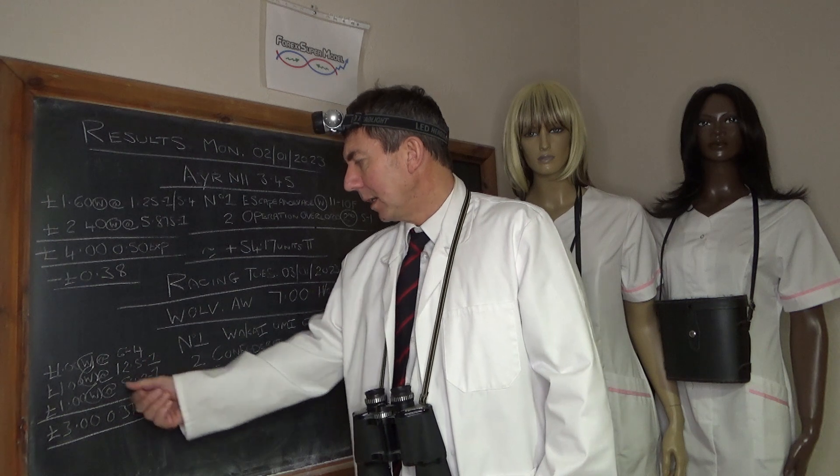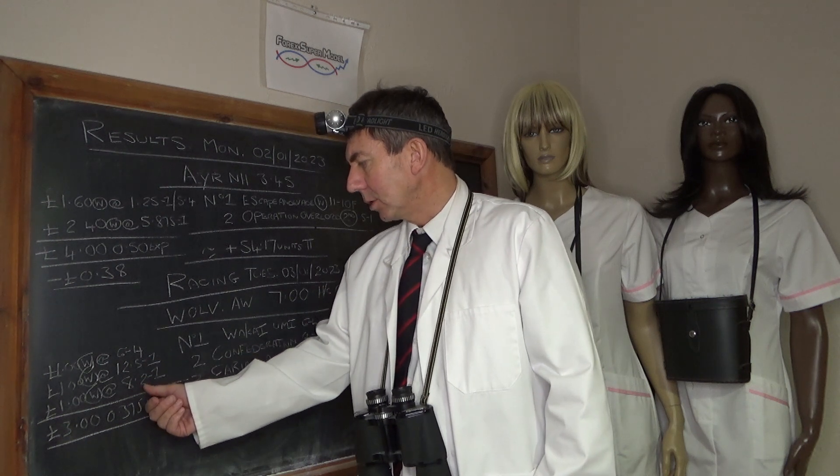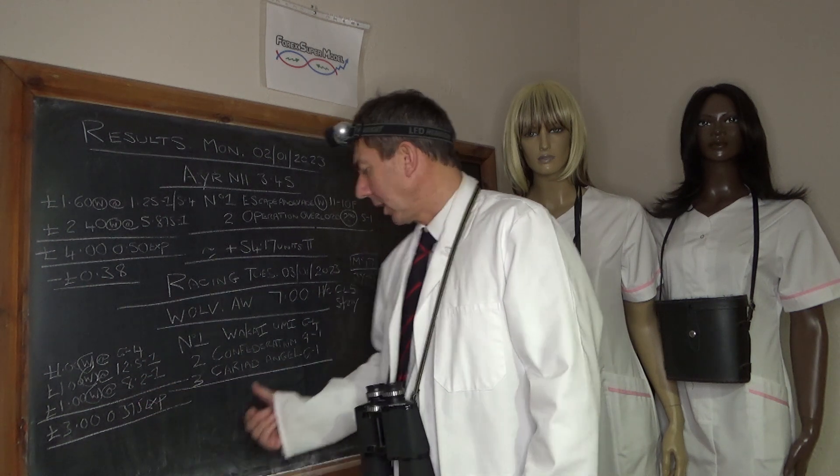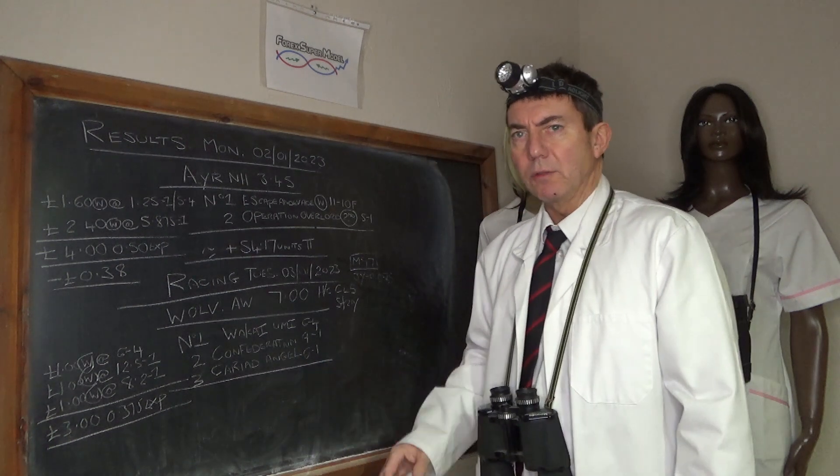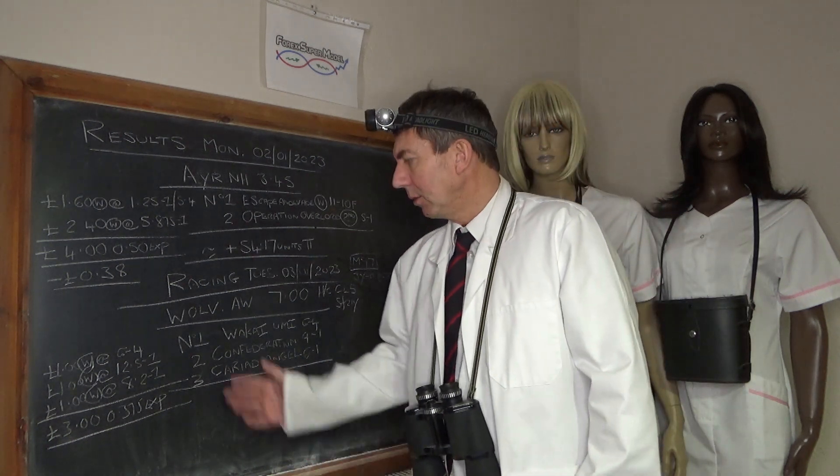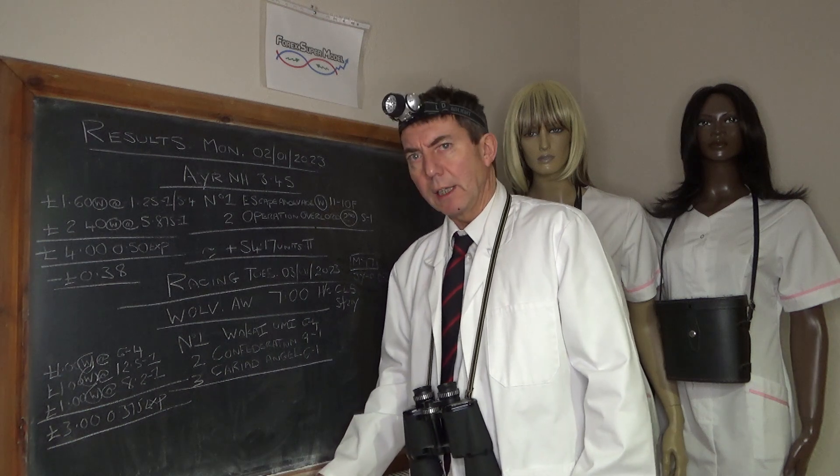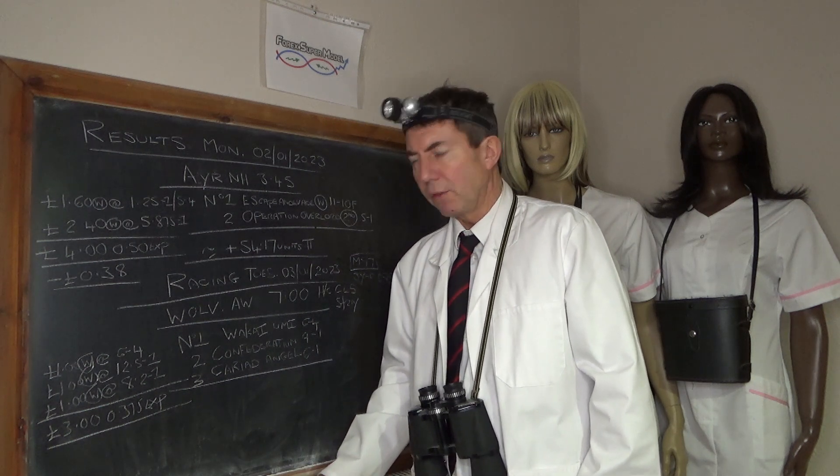Confederation 12.5 to 1, which is pretty good, and 8.2 to 1 on this Cariad Angel. The over round's about 104% at the moment, so they may change, but we've just done that anyway to get it out of the way because we've been busy doing Forex today.